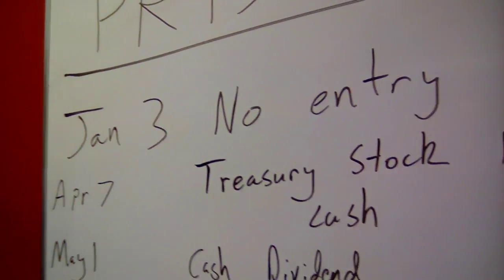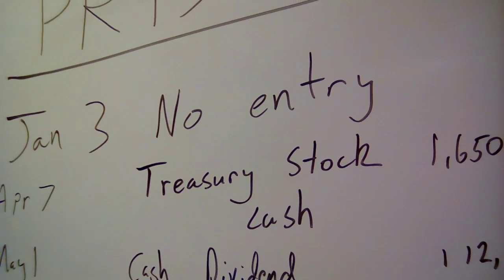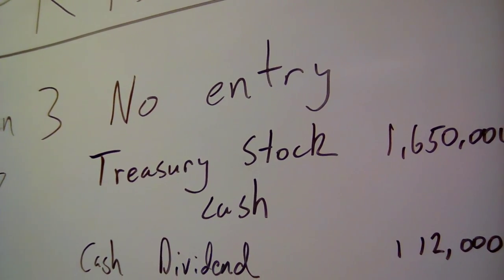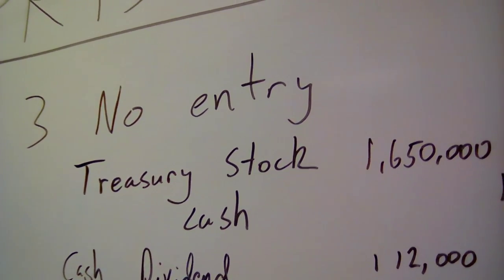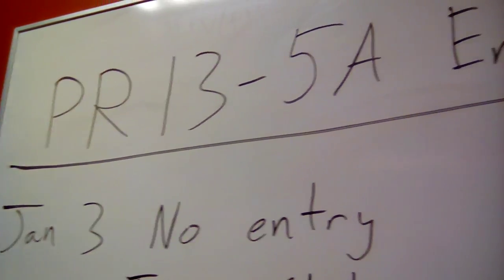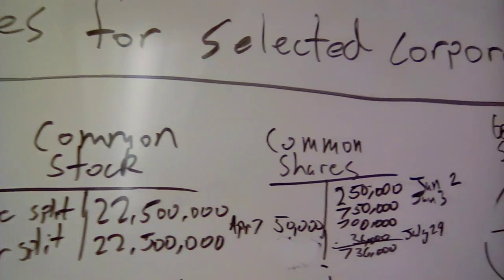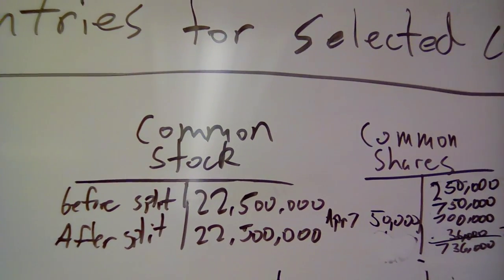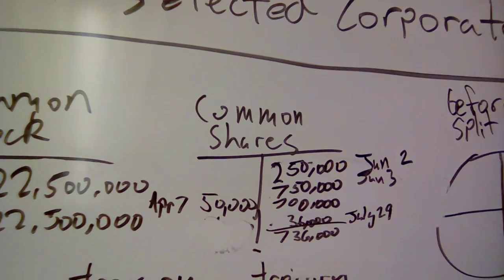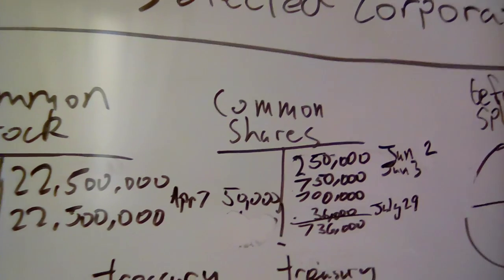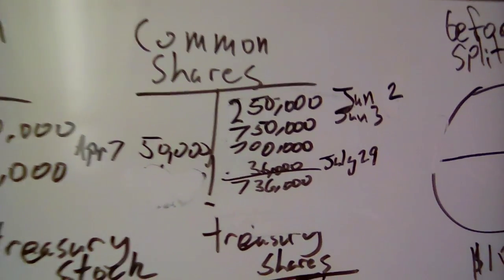So January 3rd, split the common stock 3-for-1 and reduce the par value from $90 to $30 per share. After the split, there were 750,000 common shares outstanding. There's no entry for that. When you do a stock split, there's no entry on the books, but what happens is the total value of the stock doesn't change, but the number of shares does. This is where I'm doing the video like this because if I try to do a pullback view, everything's too small to actually see.